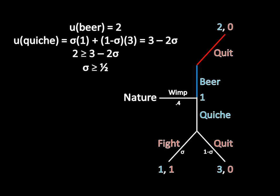But we still have a constraint — the wimp must not want to deviate. Let sigma be the probability player two fights. The wimp earns 2 from maintaining his beer strategy. If the wimp deviates, he earns 1 with probability sigma, and 3 with probability 1 minus sigma. We need to keep the wimp from deviating, so his utility for beer must be at least as large as his utility for quiche. That 'at least' part is why we must use a weak inequality. Working through the algebra, we arrive at sigma greater than or equal to 1/2.